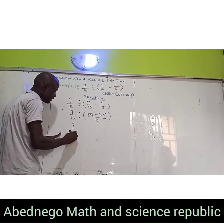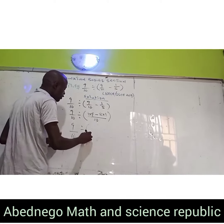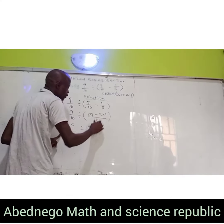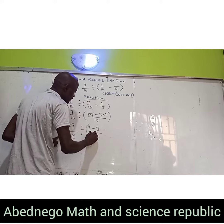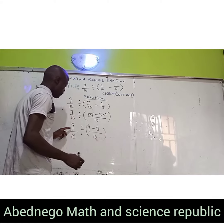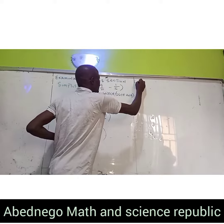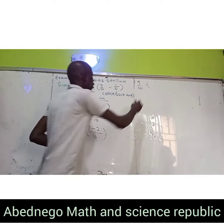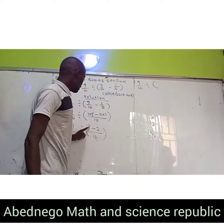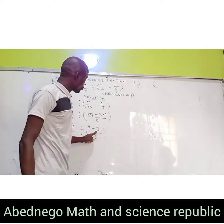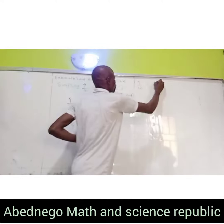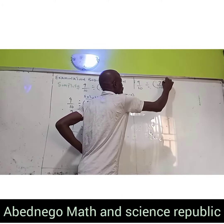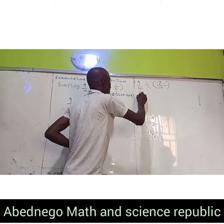So here we're going to have 9/10 divided by, open bracket: 1 times 9 is 9, minus 2 times 1 is 2, divided by 10. So we're going to have 9/10 divide by, open bracket, 9 minus 2 is 7. So we're going to have 7 divided by 10. We close our bracket.